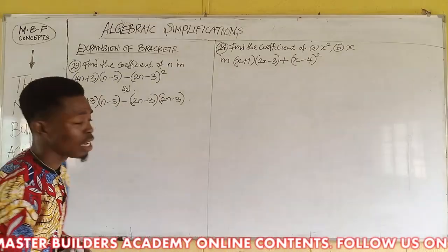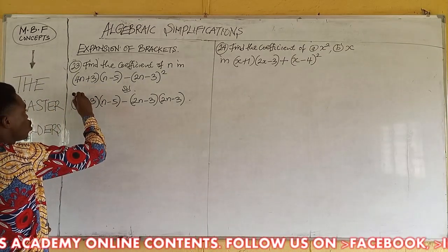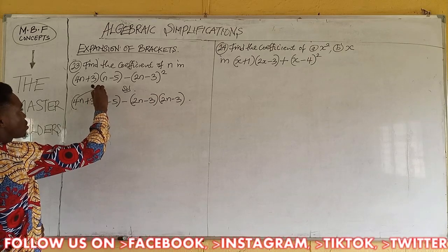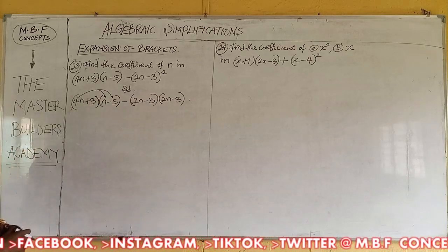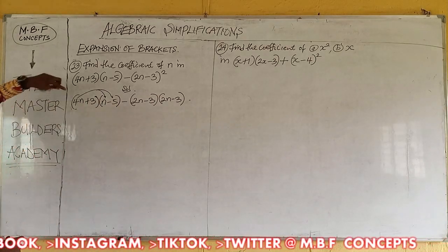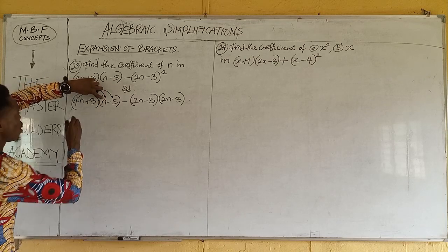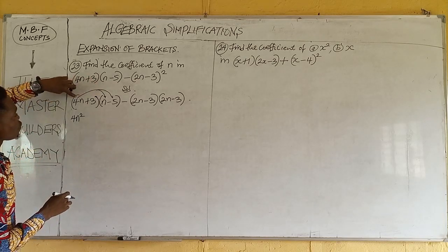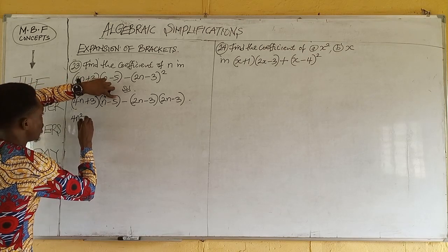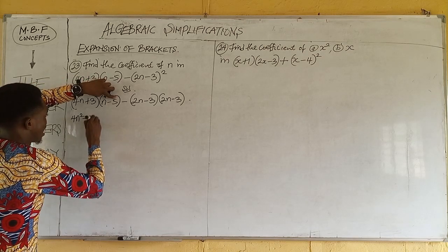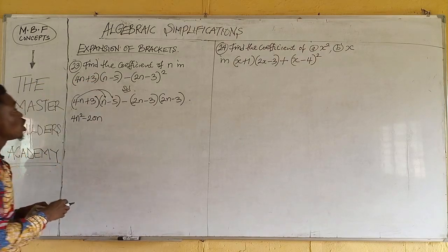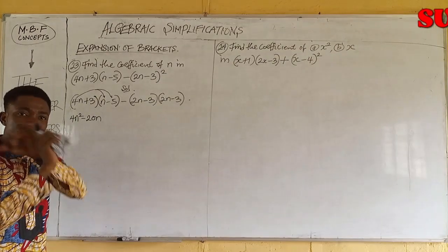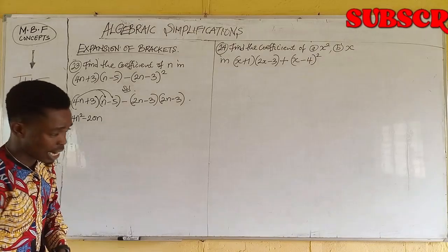We are going to use the short method of multiplication — we don't need to take one term at a time to multiply each bracket one by one. We come to the first bracket. The first term there, we multiply the two terms in the second bracket. So we are going to have 4n times n, which gives us 4n squared. Then 4n times minus 5, which gives us minus 20n. We are done using the first term in the first bracket.